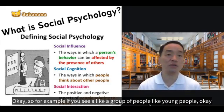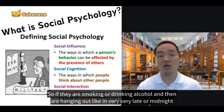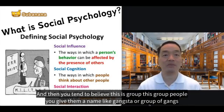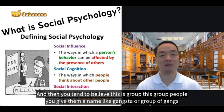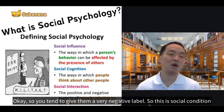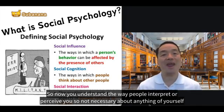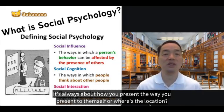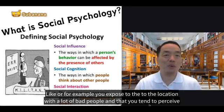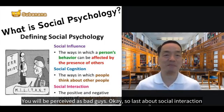This is social cognition. For example, if you see a group of young people smoking, drinking alcohol, and hanging out very late at night, you tend to label them as gangsters or a gang — you give them a very negative label. So now you understand that the way people interpret or perceive you is not necessarily about your true self; it's always about how you present yourself, your location, and your surroundings.